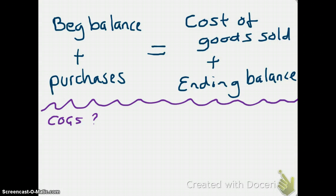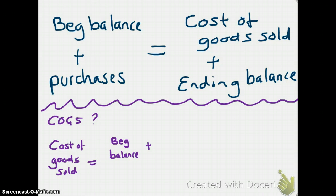So if they ask you to calculate cost of goods sold, how would you do that? Cost of goods sold is equal to beginning balance plus purchases minus your ending inventory.